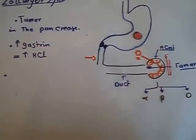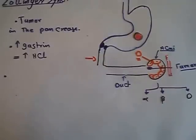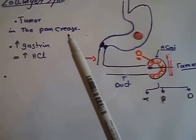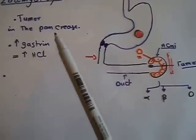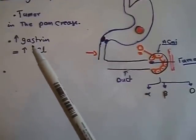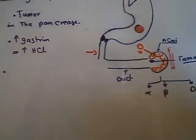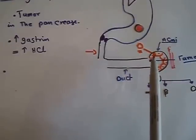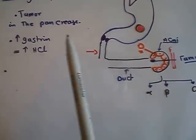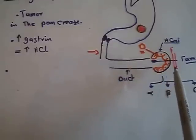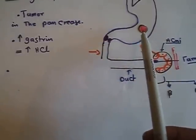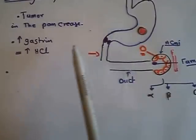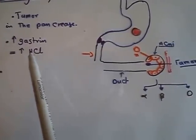Zollinger-Ellison syndrome is due to a tumor in the pancreas. This tumor is secreting gastrin, so we call this tumor a gastrinoma — a tumor that is secreting gastrin. Gastrin will enter the circulation and affect HCl secretion in the stomach, increasing the HCl.